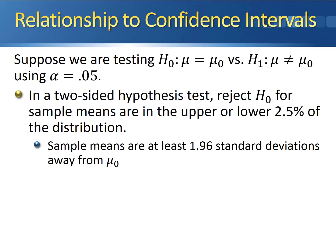This also means that the sample means are at least 1.96 standard deviations away from the hypothesized mean. This gives us enough evidence to reject the null hypothesis.